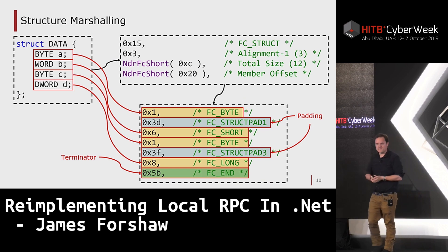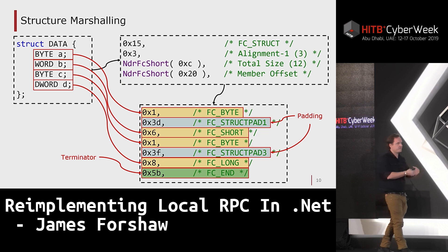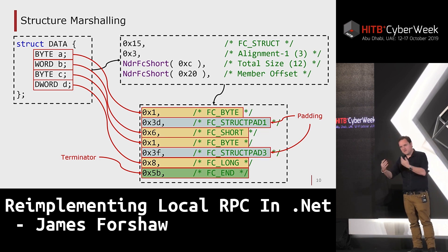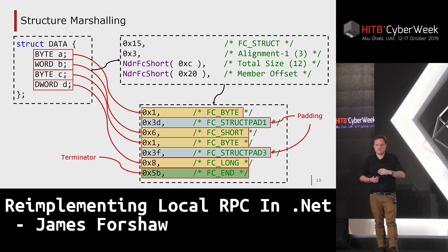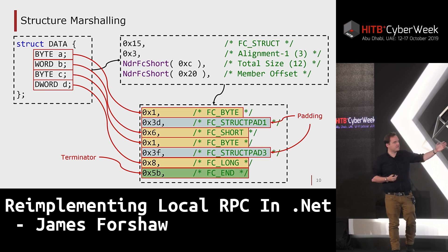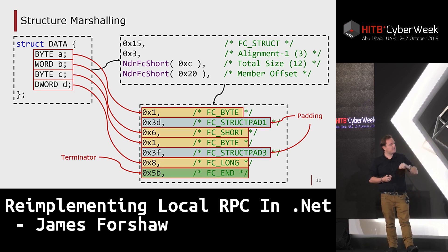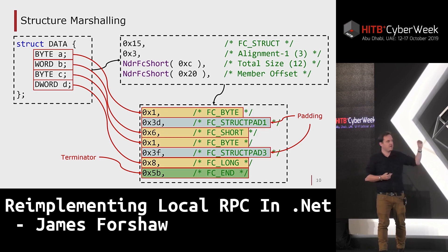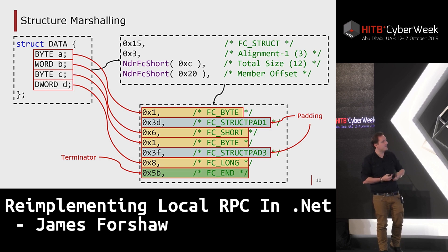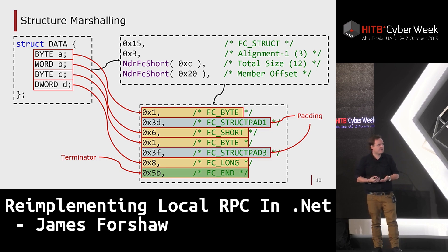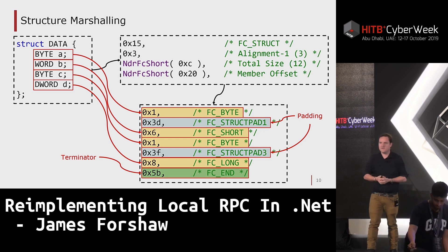Something very similar happens with structures. The compiler generates a marshalling script to marshal structures across the link. It contains useful information such as alignment, total size, and the members themselves. Because of padding and alignment — for example, a byte at offset zero and then a word needing to be naturally aligned at offset two — the format inserts padding information. This allows the runtime to marshal only real data, so it's quite rare to find memory disclosure issues due to structure padding, which would be more common in a kernel environment.